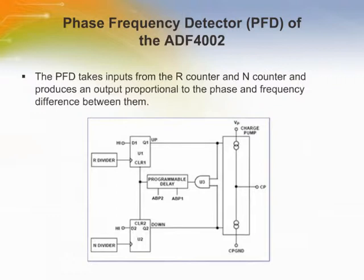The PFD takes inputs from the R counter and N counter and produces an output proportional to the phase and frequency difference between them. The PFD includes a programmable delay element that controls the width of the anti-backlash pulse, which ensures there is no dead zone in the PFD transfer function and minimizes phase noise and reference spurs. Two bits in the reference counter latch, ABP2 and ABP1, control the width of the pulse. The PFD's output current pulses are filtered and integrated to generate a voltage that drives the VCO to increase or decrease the output frequency so as to drive the PFD's average output towards zero.